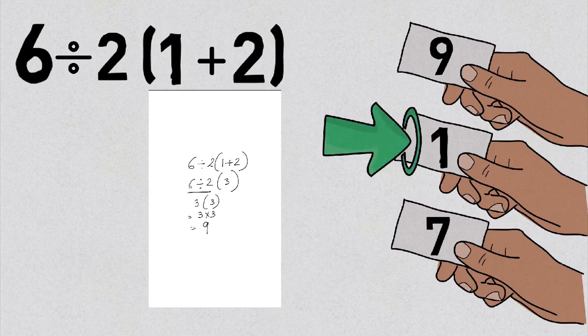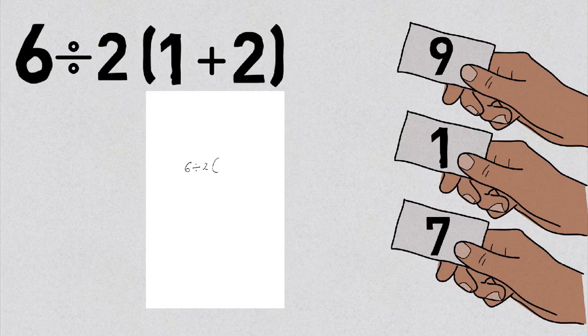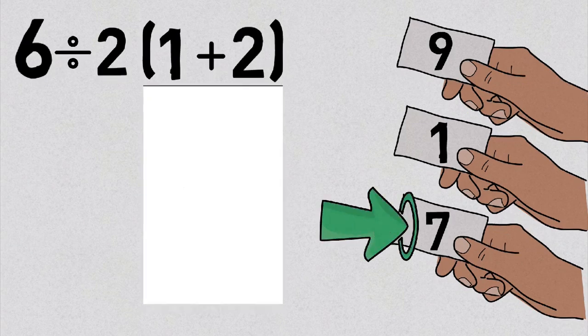Now let us look at the next popular answer which is 1. And this is how some people arrived at 1. And finally, this is how some people arrived at 7.